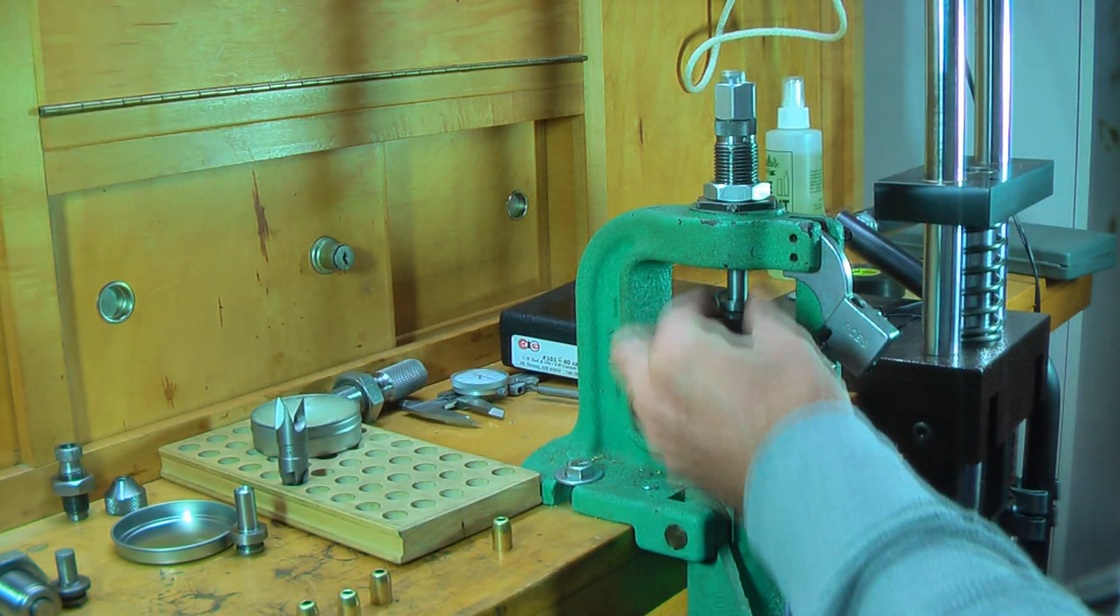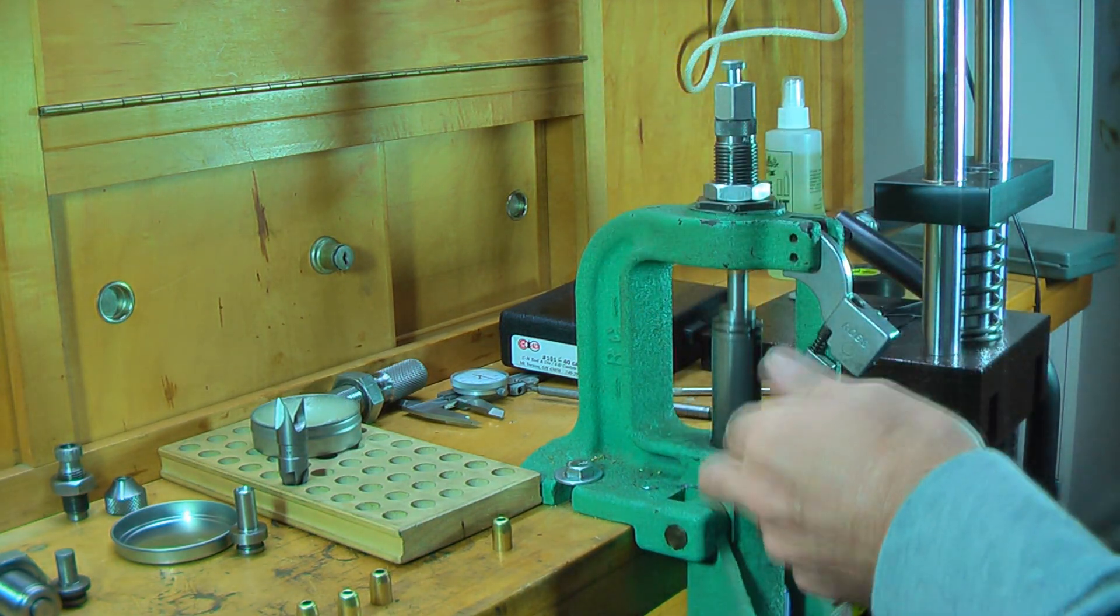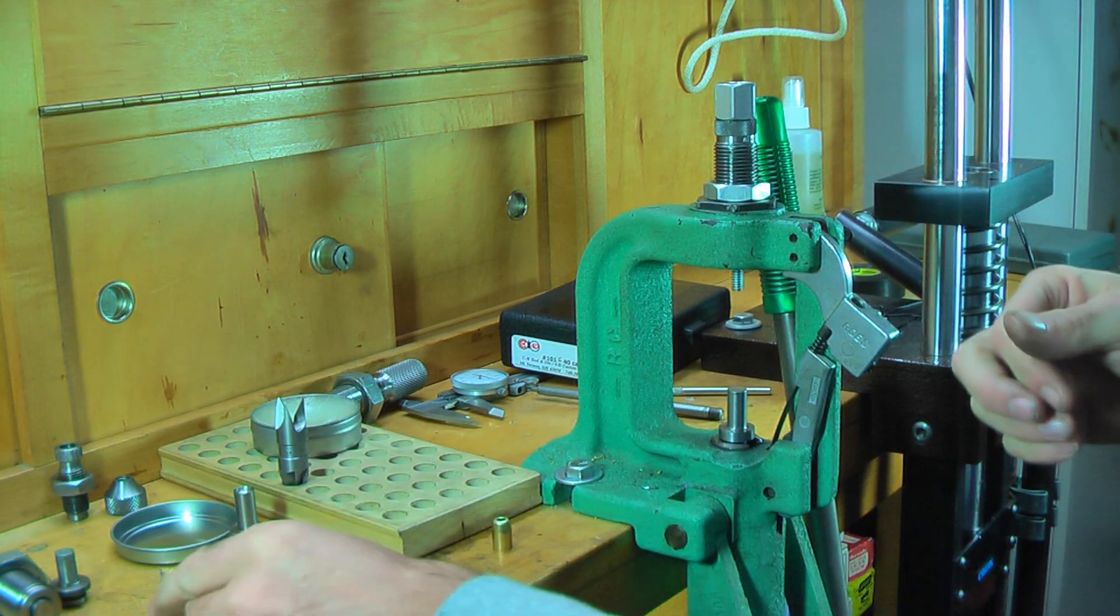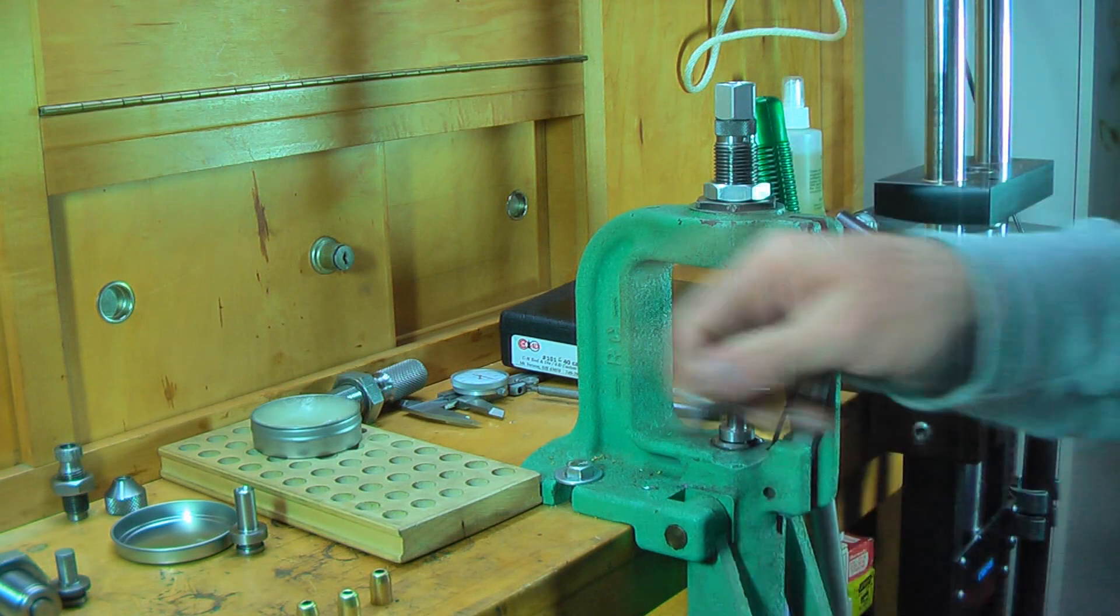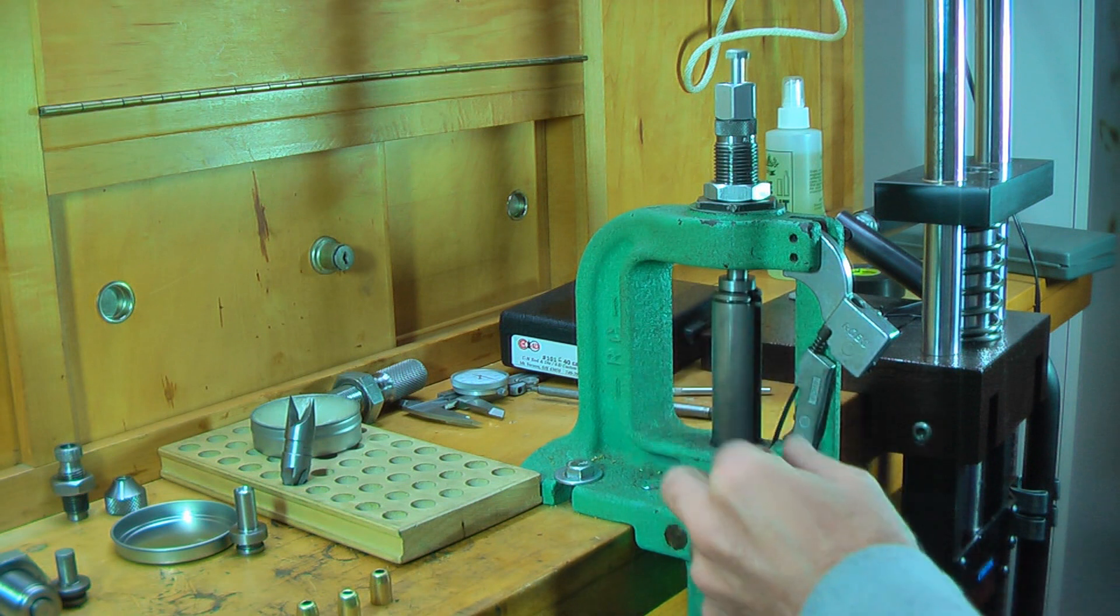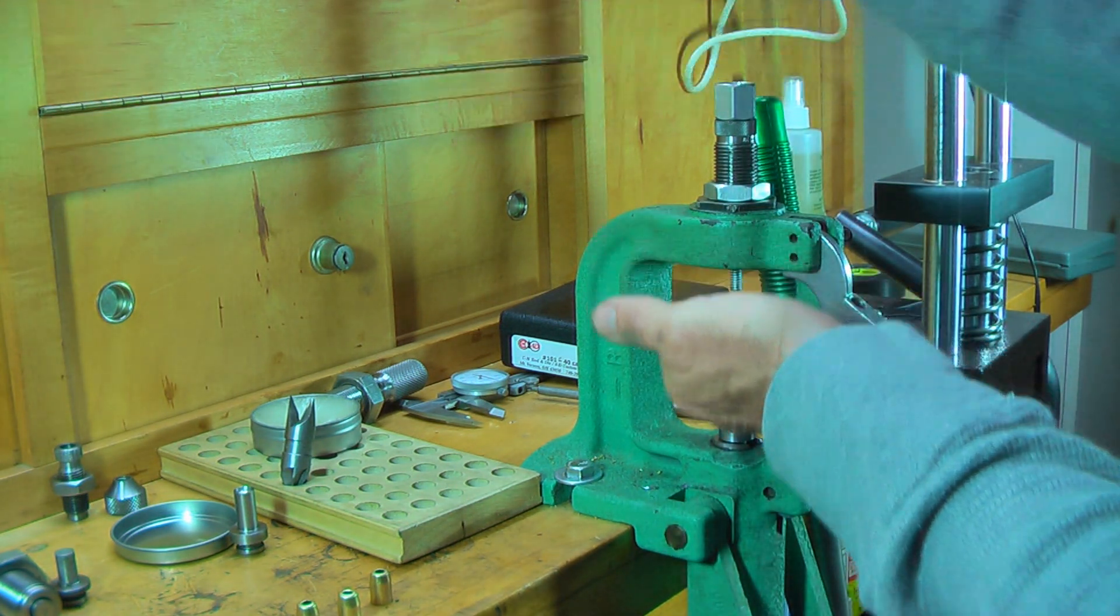You can also take this little mandrel out and polish it with some emery paper to make it nice and smooth so that when the jacket goes on it, it will do so very smoothly.